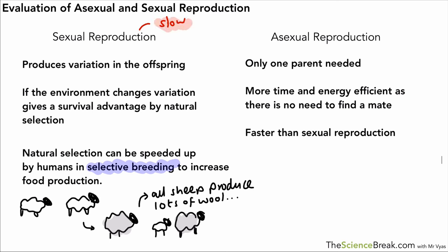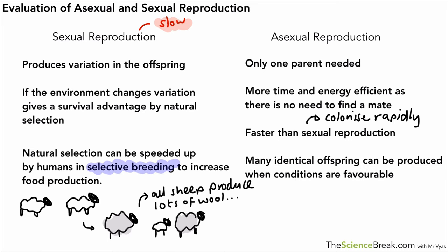An advantage of being faster is that species can colonise an area very quickly. So if we had a plant introduced to a certain area with lots of resources like nutrients, water, light, that kind of thing, it could very quickly take advantage of those resources by reproducing very fast.